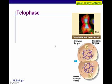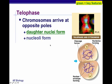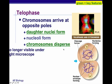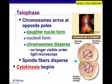In telophase, the final phase of PMAT, the chromosomes arrive at opposite poles and the daughter nuclei form. The nucleoli form — this is where RNA is made. The chromosomes disperse and are no longer visible under a light microscope. Spindle fibers disperse, and then cytokinesis begins.